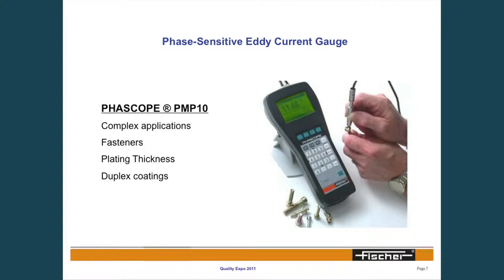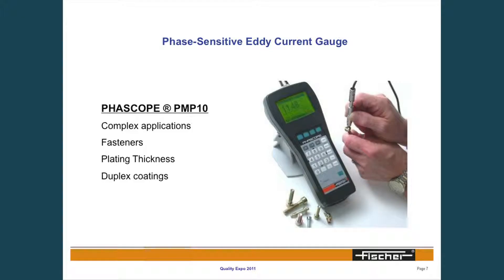There are multiple test methods that can achieve the same goal. For instance, measuring zinc plating — you could use magnetic induction, but it might not be ideal because of the part geometry or size. That's why phase-sensitive eddy current would be the method of choice. The phase-sensitive method is ideally suited for measurements on very small components. It provides excellent repeatability and is designed for measuring zinc plating on fasteners, nuts, bolts, and things of that nature.